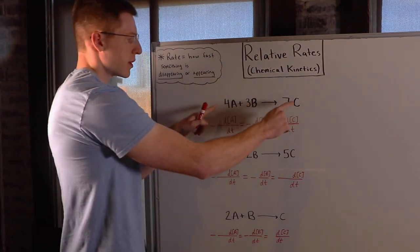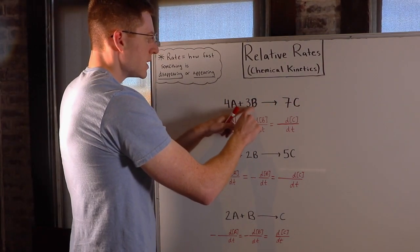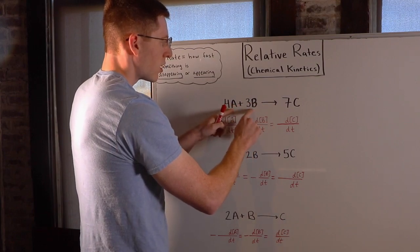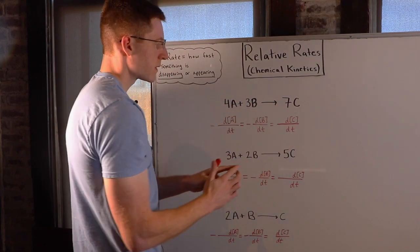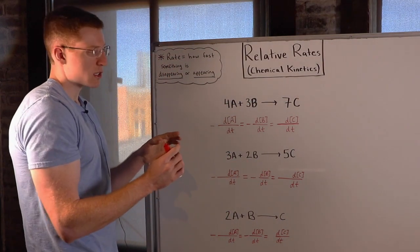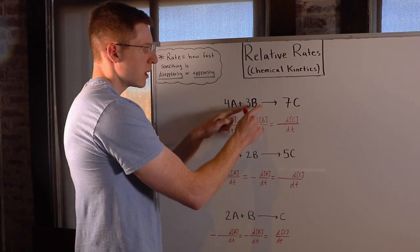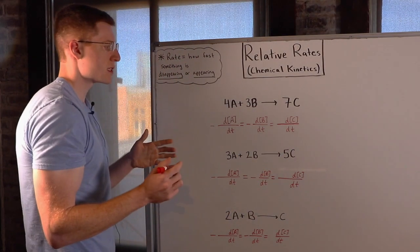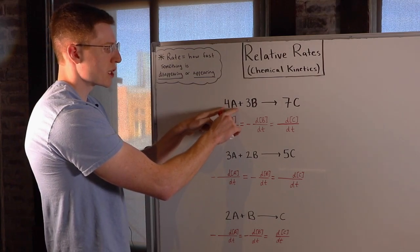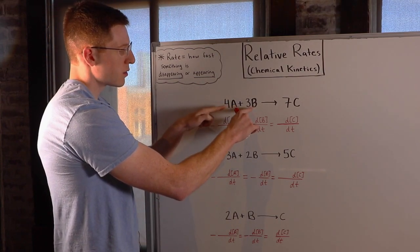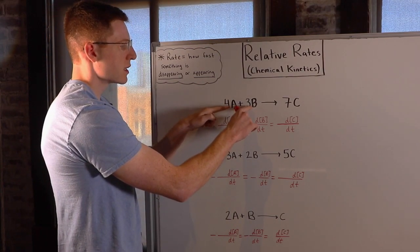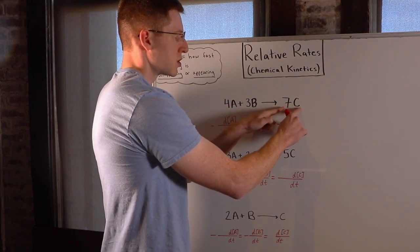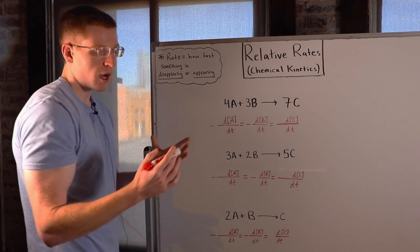For example, in this reaction A and B are turning into C — the reactants are turning into the products. In other words, the reactants are disappearing while the product is appearing. So the change in concentration per change in time of the reactants is negative, while the change in concentration per change in time of the product is positive.